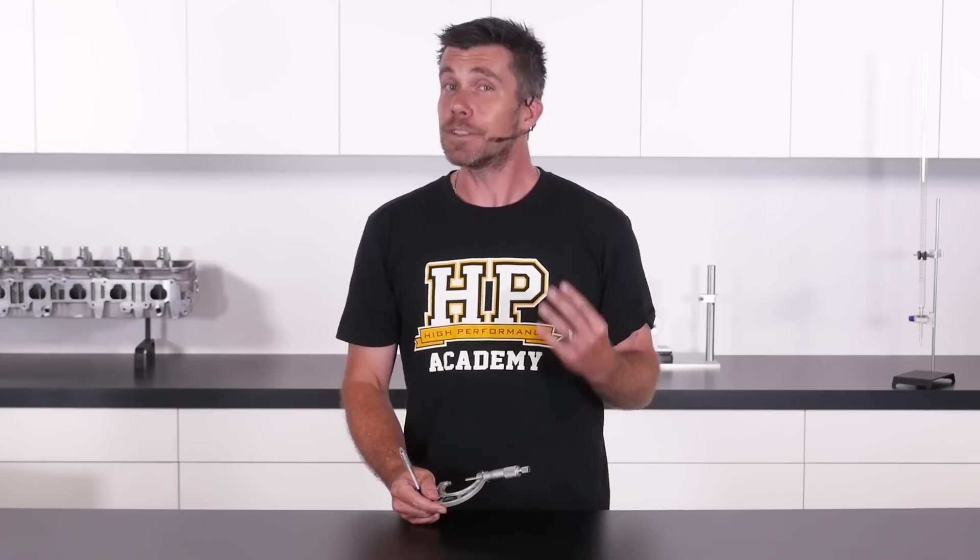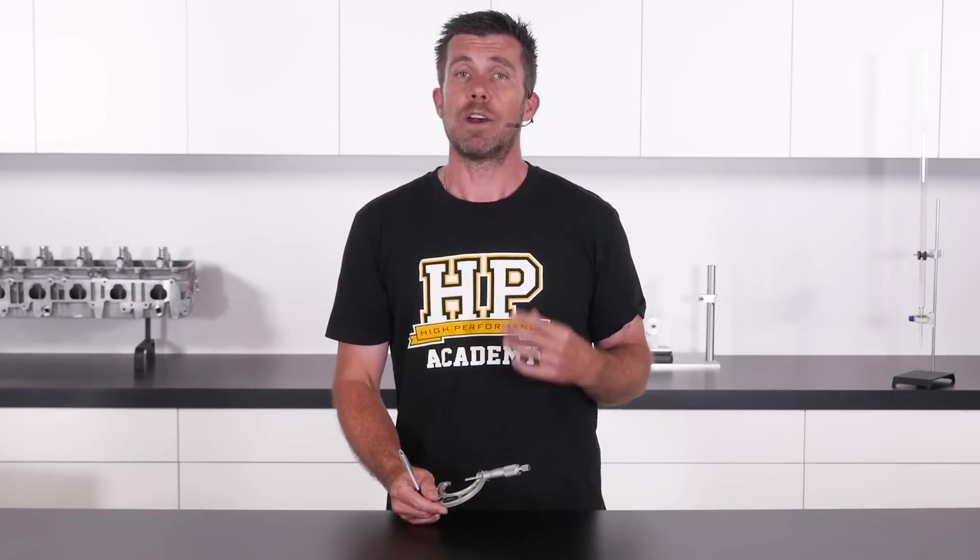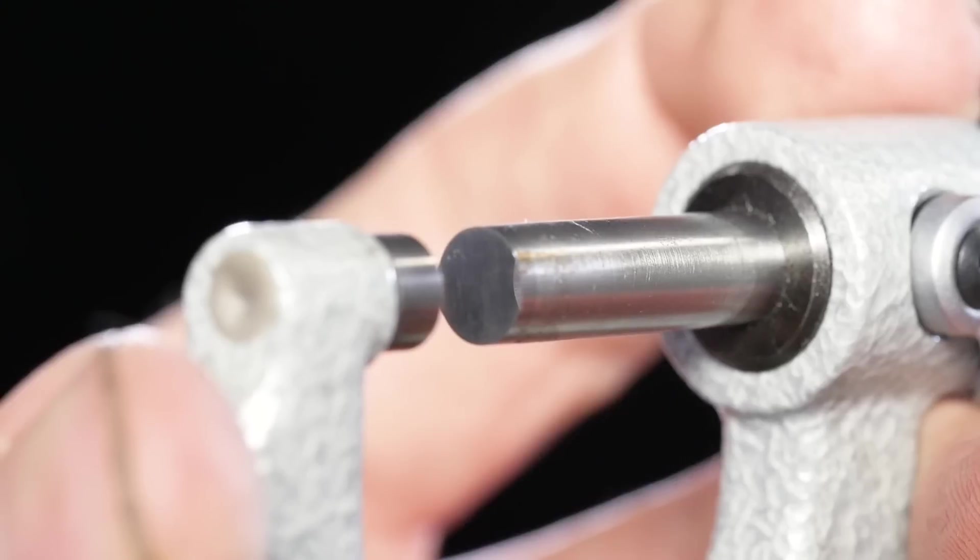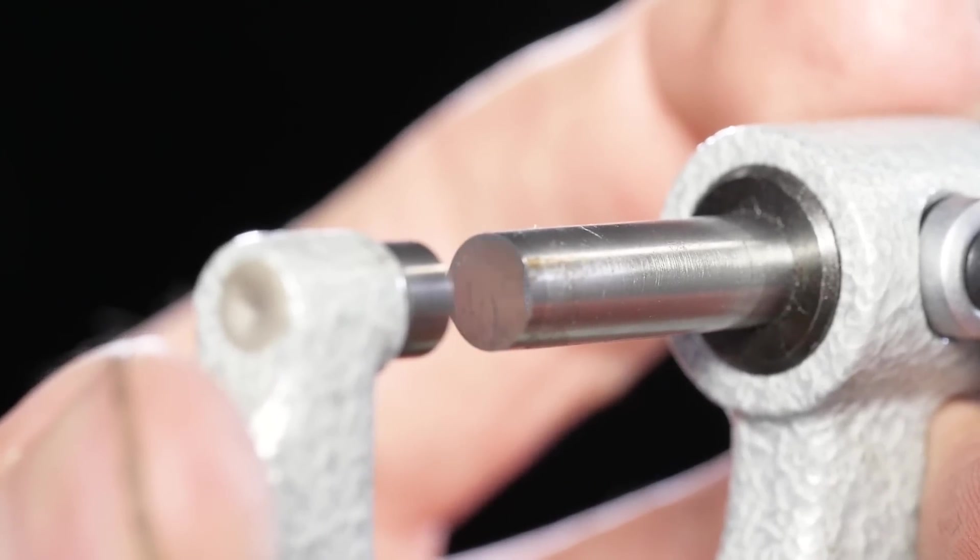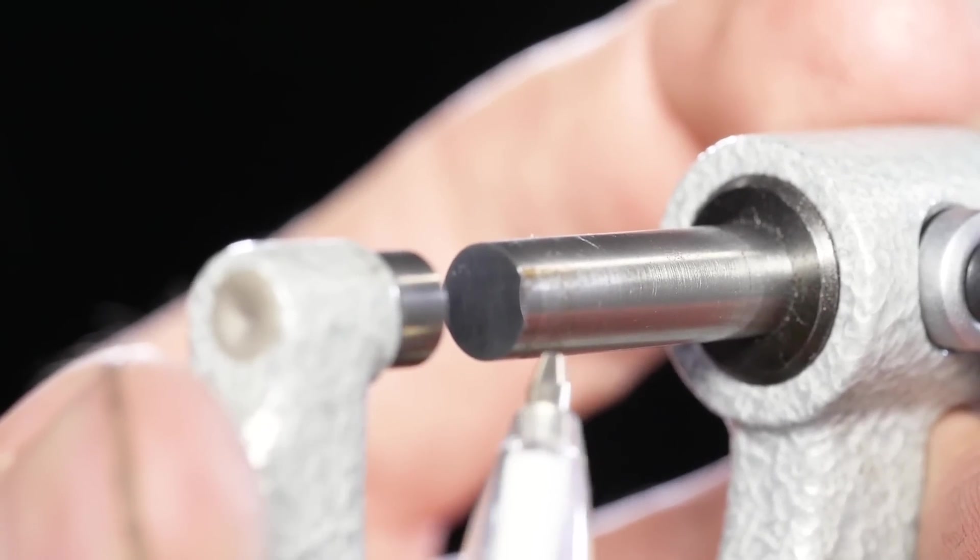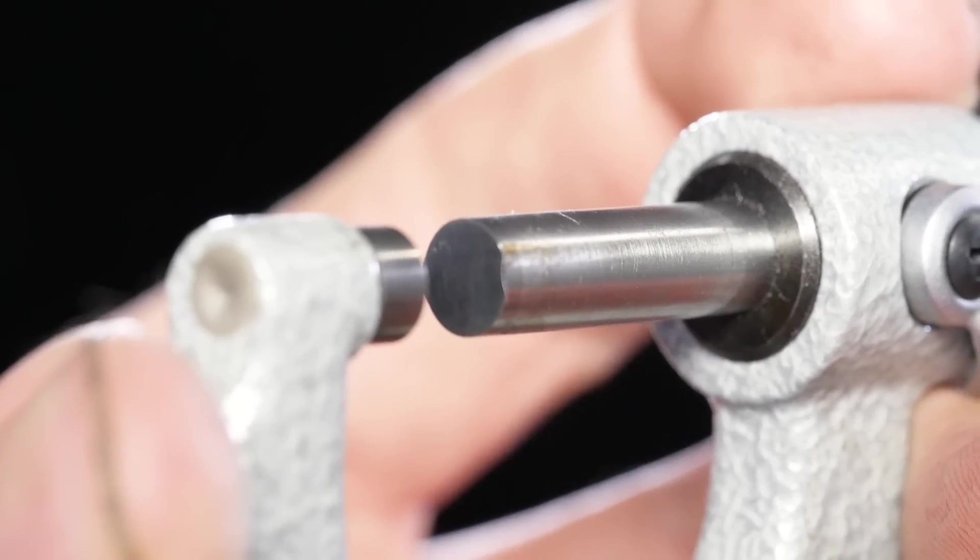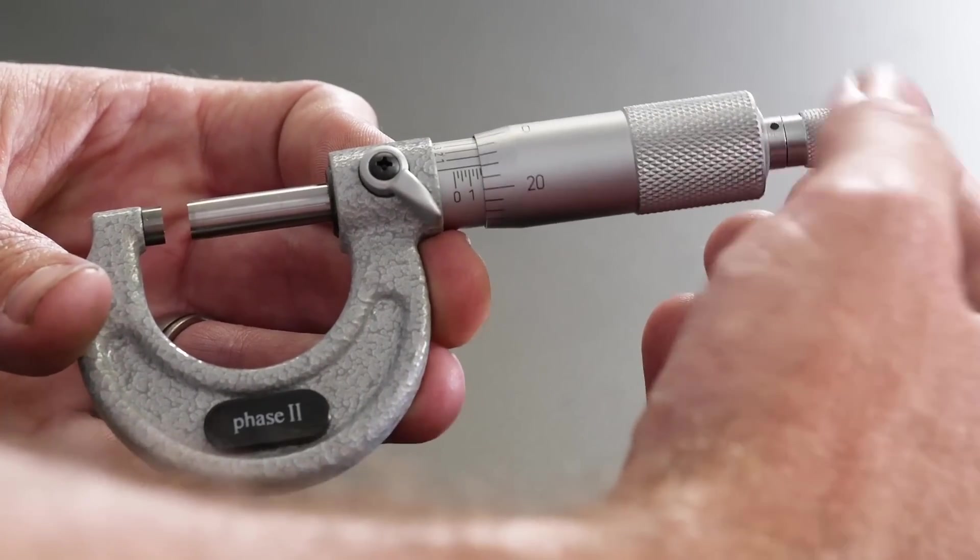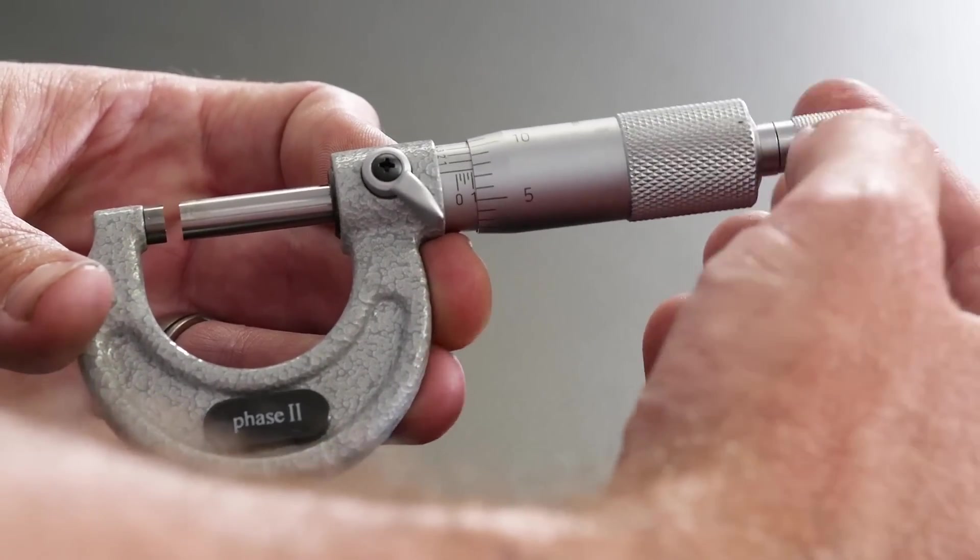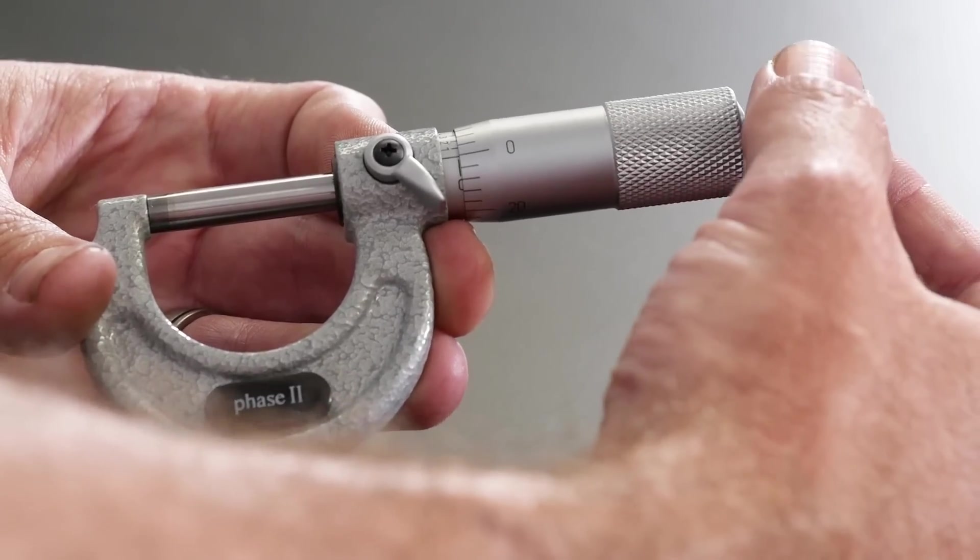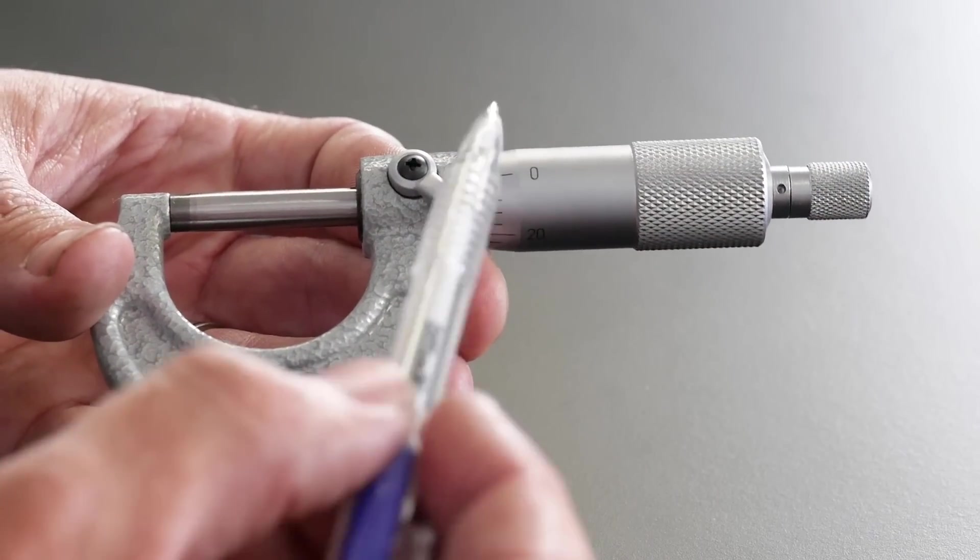Now that we've seen the different components of the micrometer, we're going to look at how we can actually use a micrometer to make a measurement. Before we make any measurements, it's important to make sure that the measurement faces of the anvil and the spindle are both clean and free of dirt and debris, as these can have a dramatic effect on the accuracy of our reading. Now what we're going to do is close down the micrometer and just make sure that it is able to accurately read zero.